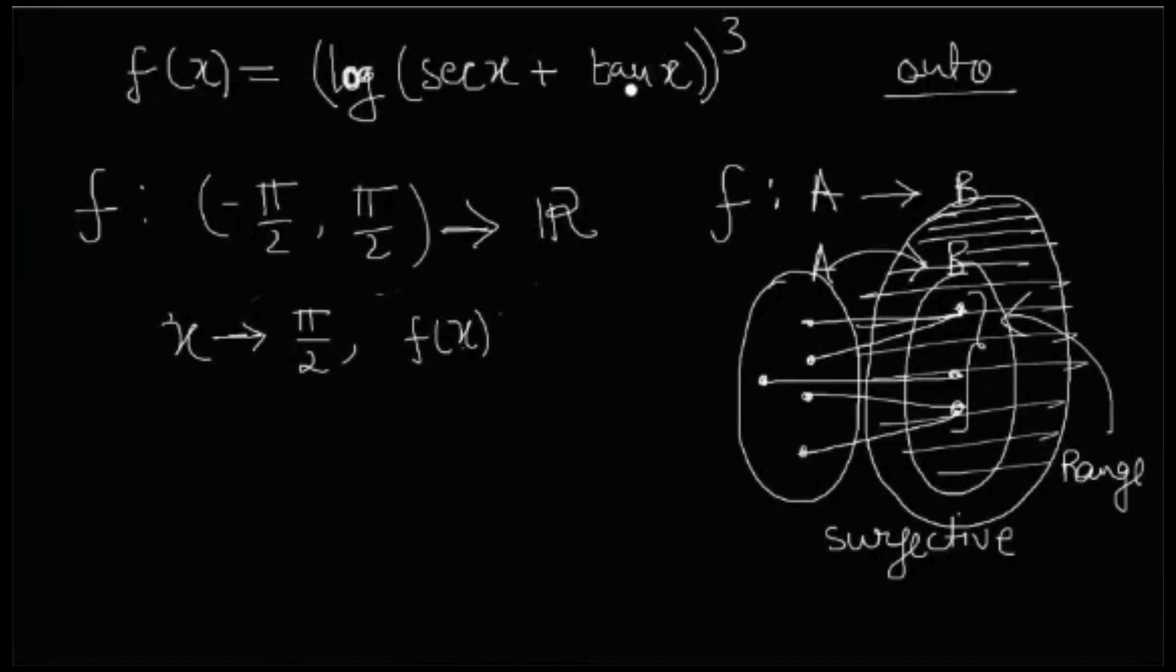And tan pi by 2 is, sorry, cos pi by 2 is 0, sec pi by 2 will become infinity. But tan pi by 2 is how much?